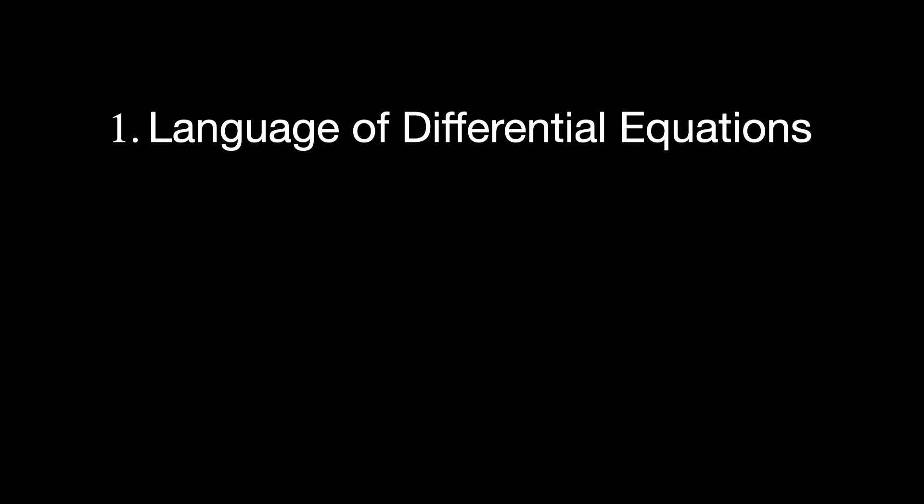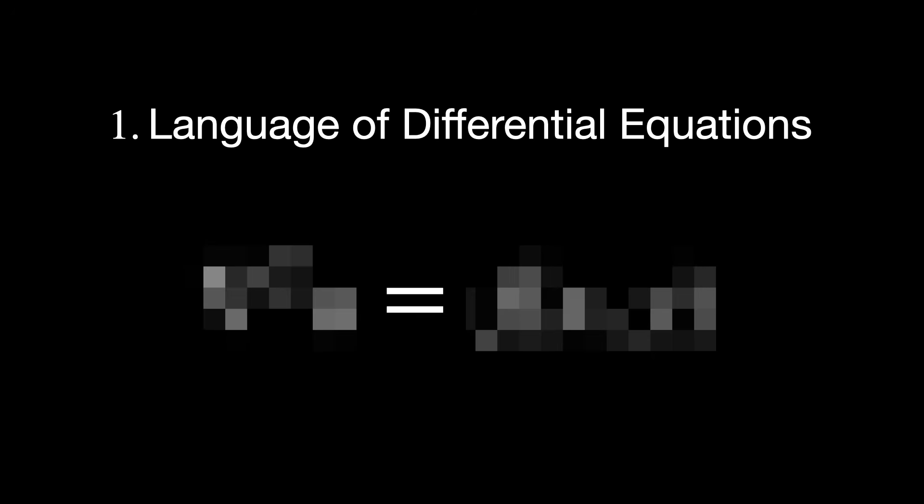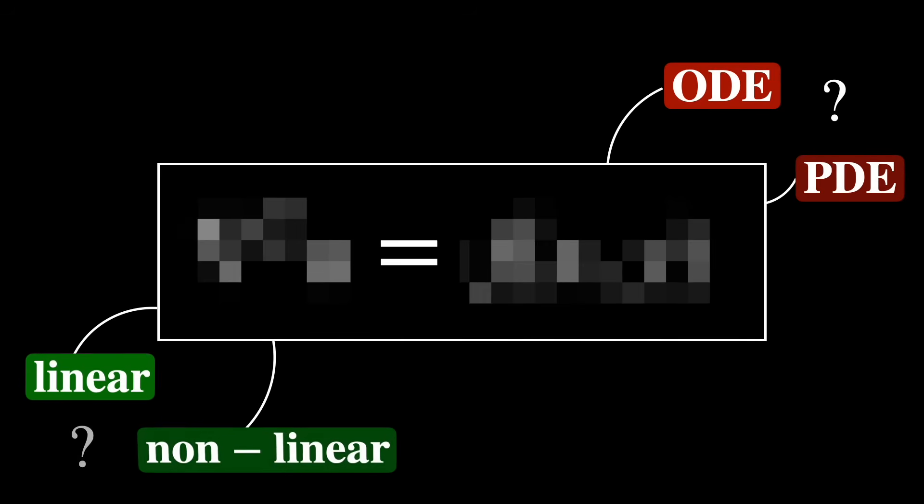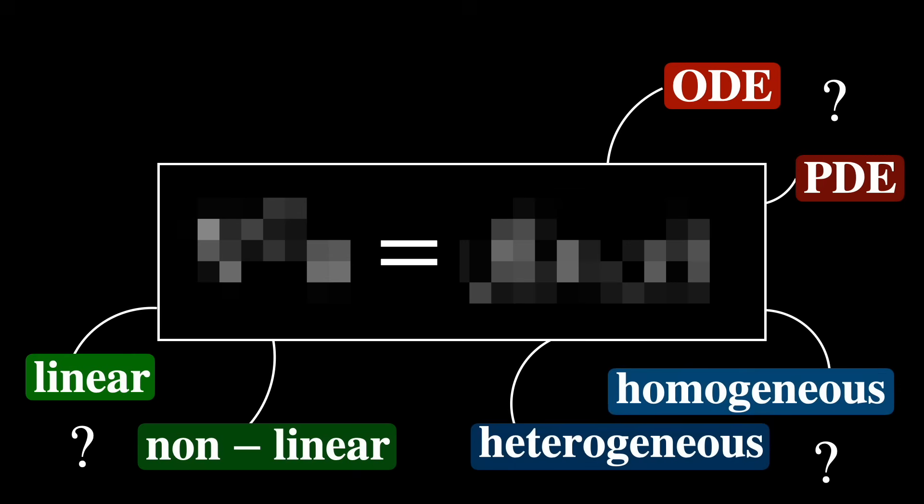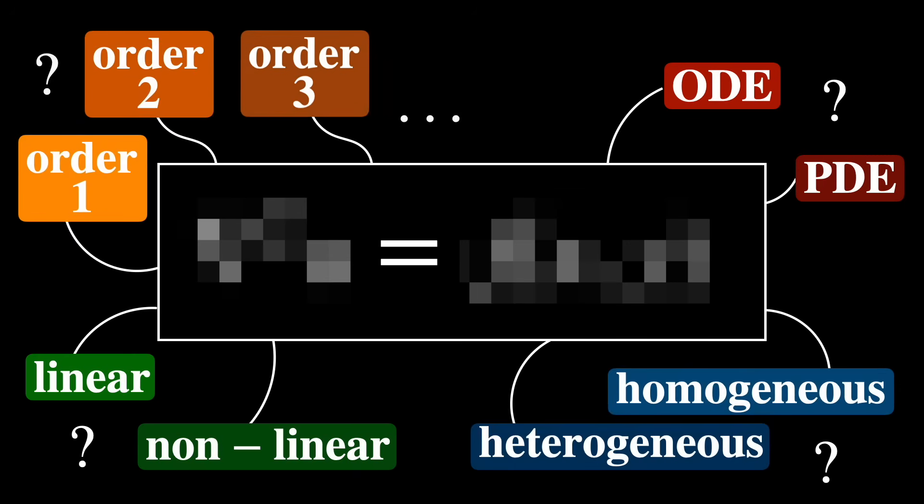What does it really take to master differential equations? The first thing you need to master is the language of differential equations. When you look at a differential equation, you should be able to immediately identify whether it's an ordinary or partial differential equation, whether it's linear or non-linear, whether it's homogeneous or heterogeneous, and what its order is. Why does it matter? Because your ability to choose the right method depends on how you classify the equation.